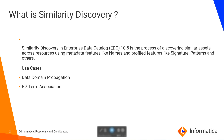What is similarity discovery? Similarity discovery is a process of discovering similar assets across resources using metadata features like names and profiled features like signature, patterns, and others. A similarity score between two assets is considered to decide whether a business glossary term or data domain should be propagated from one asset to the other in the catalog. Basically, similarity discovery enables you to run data domain propagation or business term association from one asset to the other in the catalog.